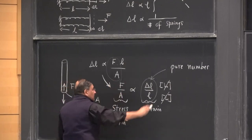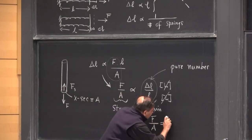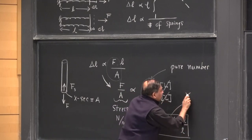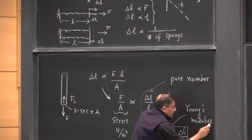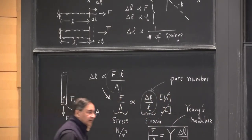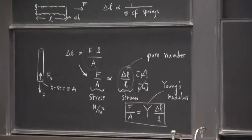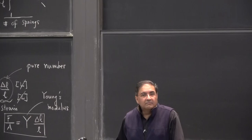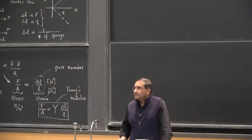You have to convert the proportionality into an equation: force per unit area equals some constant Y times delta L over L. Some books call it E, but I prefer Y. This Y is called the Young's modulus — a measure of how soft or how hard it is to pull a material. For stainless steel wires, often used in suspension bridges like the Golden Gate Bridge, you're putting your life on the strength of their Young's modulus without really knowing it.